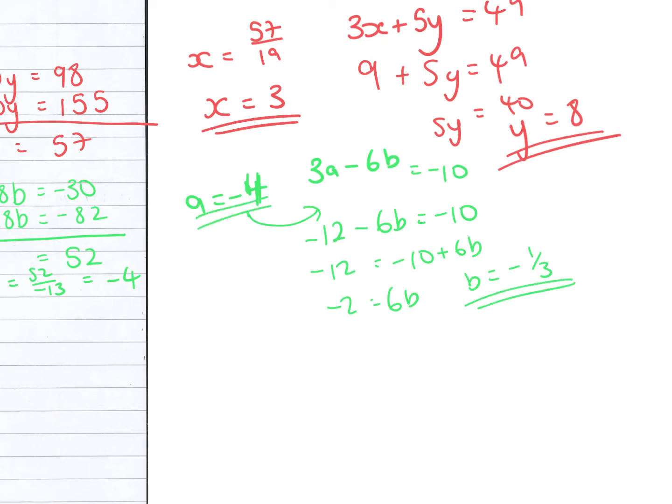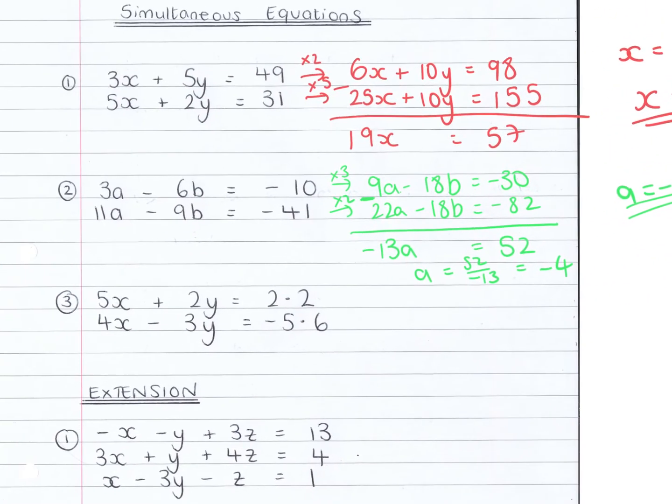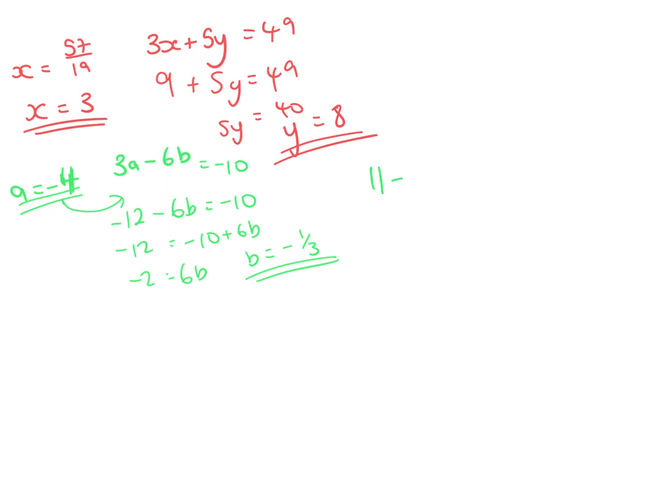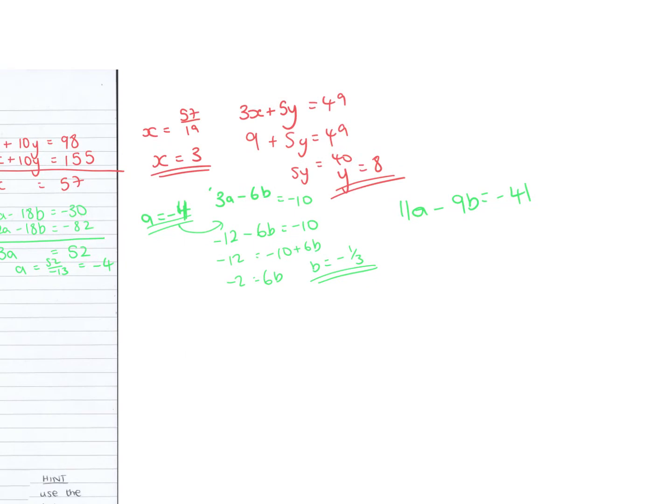Now that looks like a weird number, but you can always check. The other equation says 11a minus 9b equals minus 41. So if a is minus 4, 11a would be minus 44. Minus 9 times minus 1 third, so I've got minus 44 add 3, which is minus 41, which is what they have at the top.